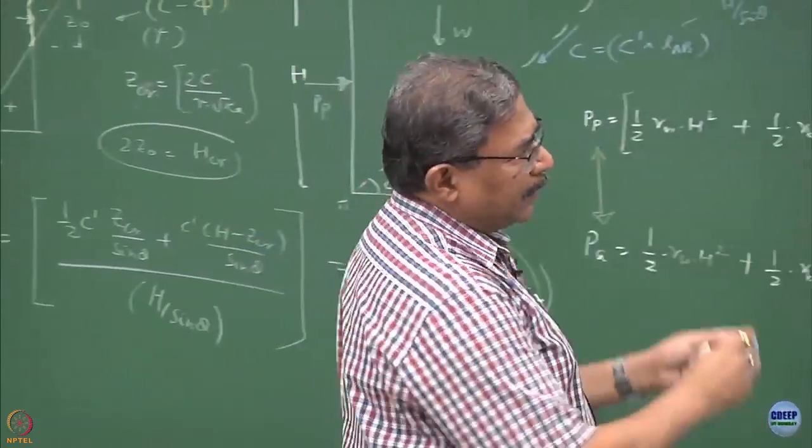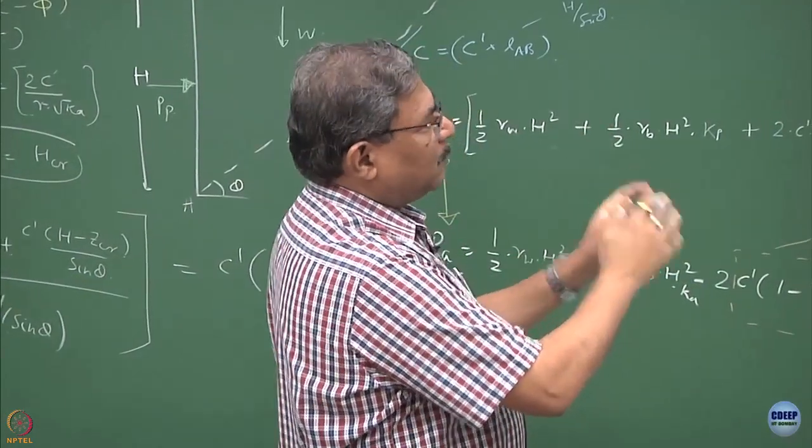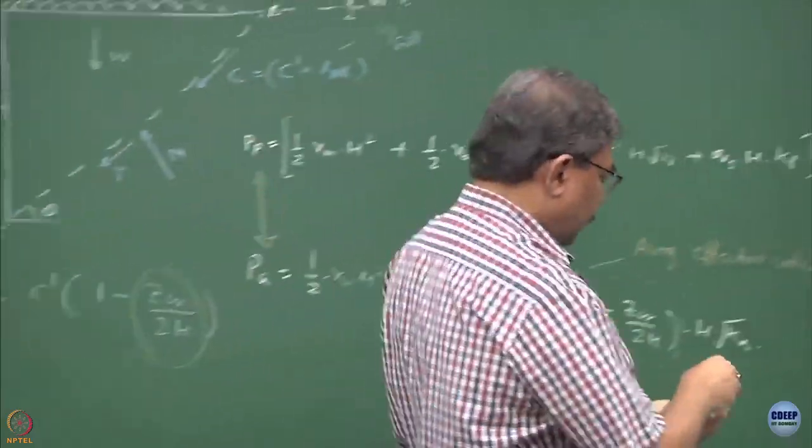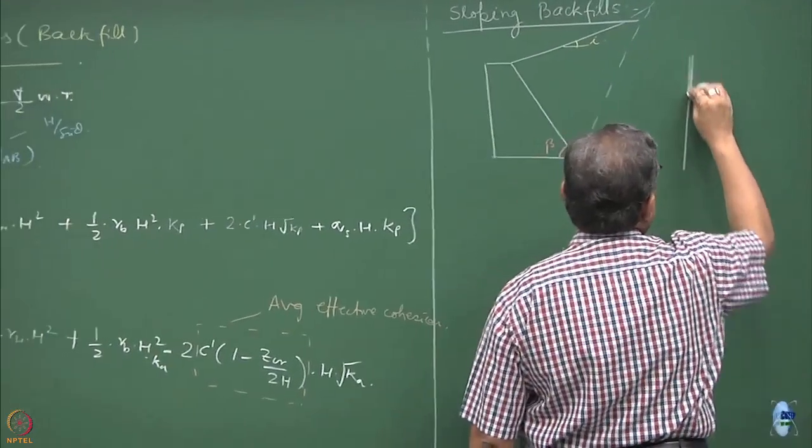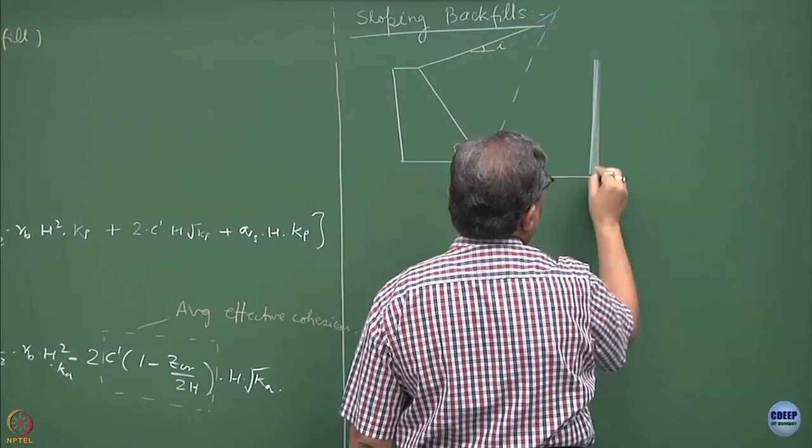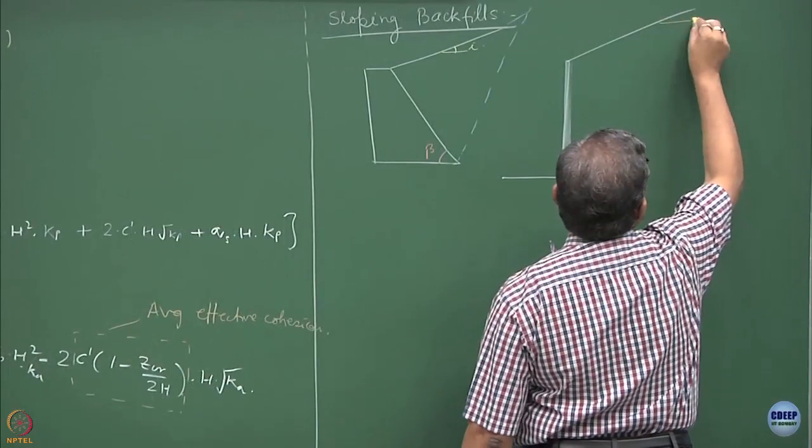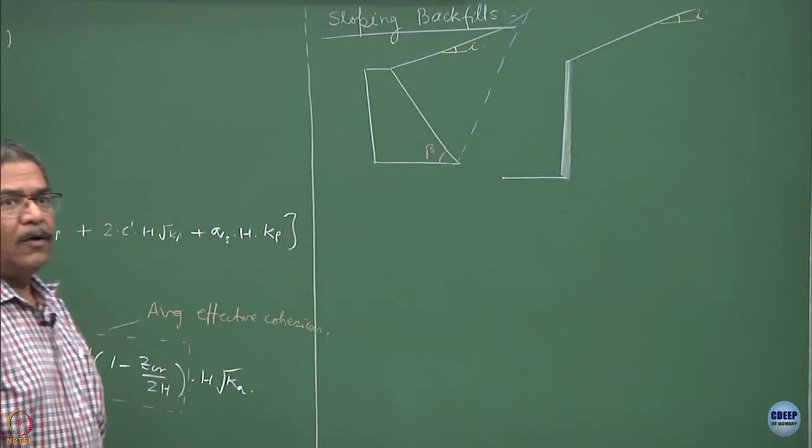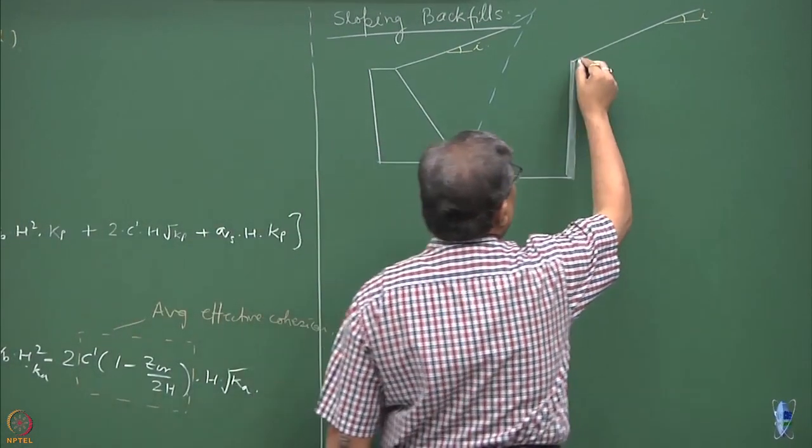So let us make this problem easy by assuming that still this is the Rankine wall and in this Rankine wall which is vertical, the backfill happens to be inclined. This is the initial case when the backfill was horizontal.